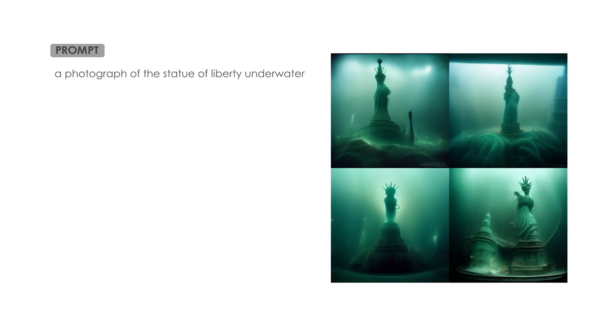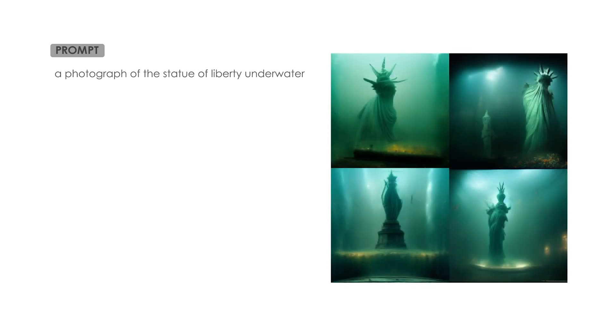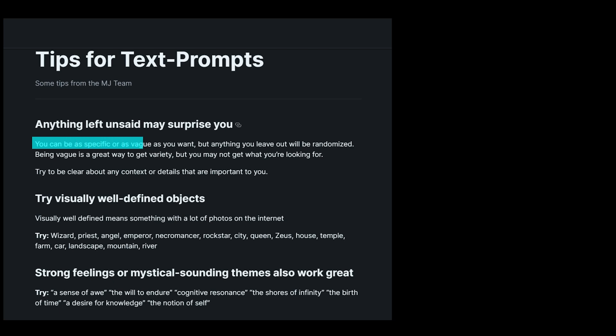You type forward slash imagine and then whatever you want to create — for example, 'a photograph of the Statue of Liberty underwater with fishes.' I waited a few seconds and this was the result. They gave me four different options in low resolution. I can select any option to see it in larger detail by clicking U1, U2, U3, or U4, or generate four more variations. You can also type the same prompt again but add more details. You can be as specific or as vague as you want, but anything you leave out will be randomized.